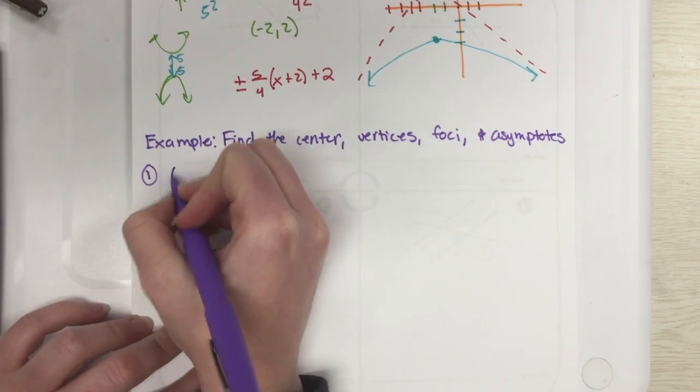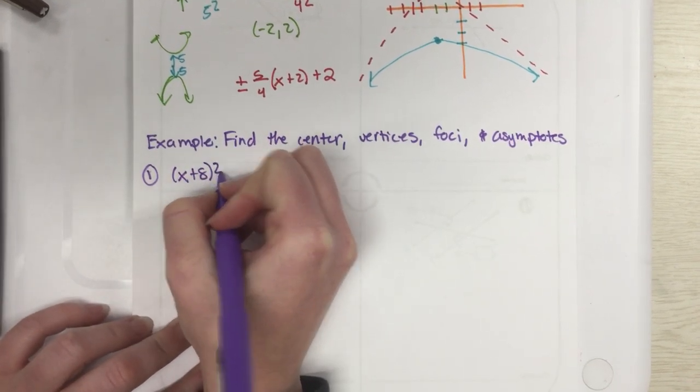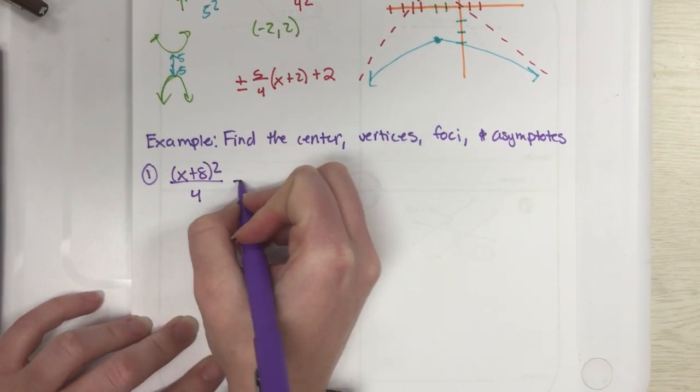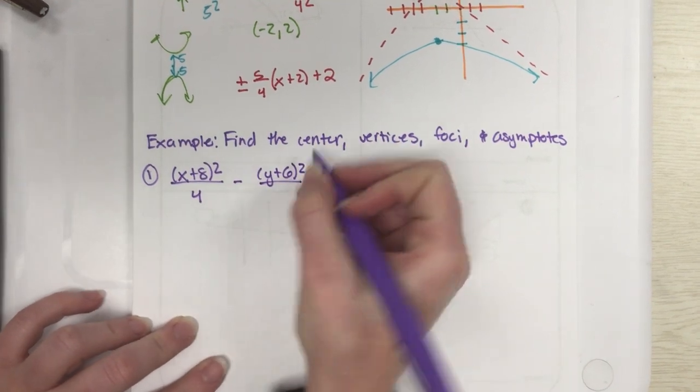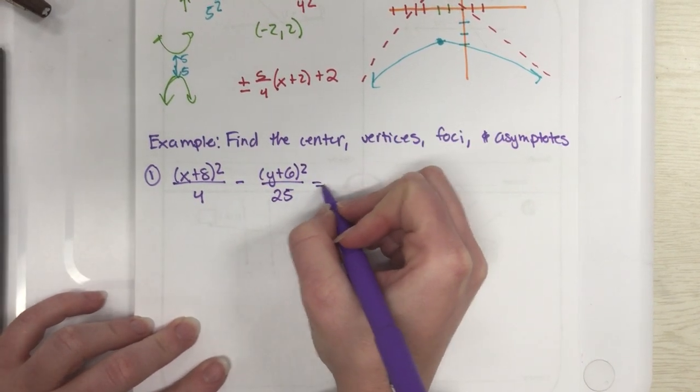All right, and so the problem we are going to do for this one is (x+8)² over 4 minus (y+6)² over 25 equals 1.